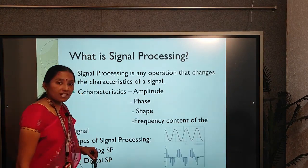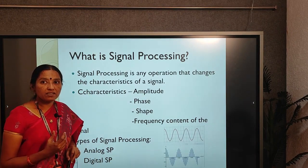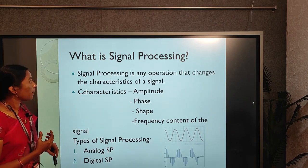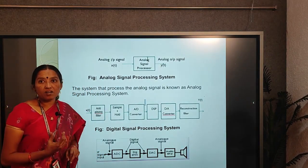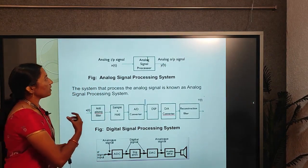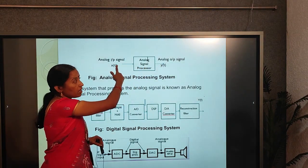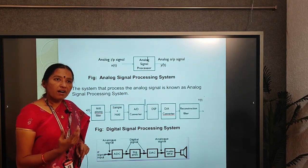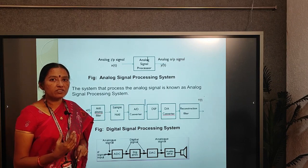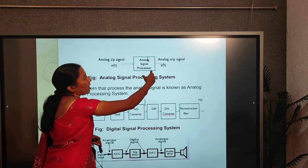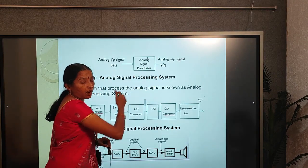A digital signal consists of two distinct levels: ones and zeros. An analog signal processing system requires analog input coming from a transducer or communication signal — a transducer converts one form of energy into another. After processing, the system produces an analog output.